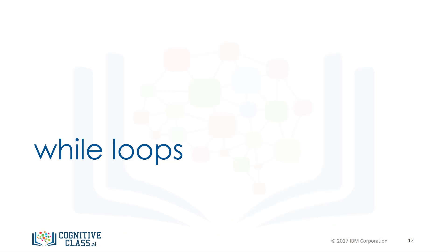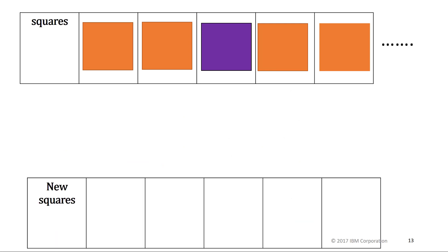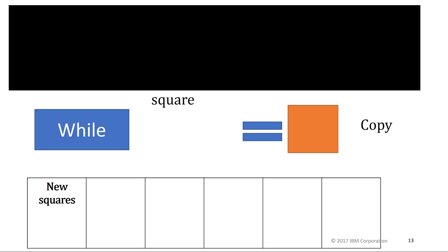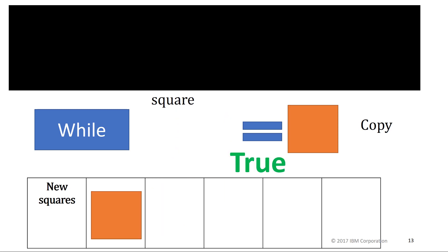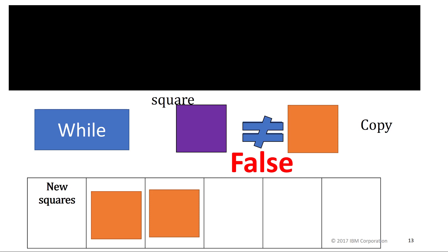While loops are similar to for loops, but instead of executing a statement a set number of times, a while loop will only run if a condition is met. Let's say we would like to copy all the orange squares from the list squares to the list new squares, but stop if we encounter a non-orange square. We would simply continue the process while the square is orange. For the first square, we check if it is orange — it satisfies the condition, so we copy it. We repeat for the second square. In the next iteration, we encounter a purple square, the condition is not met, so we stop.